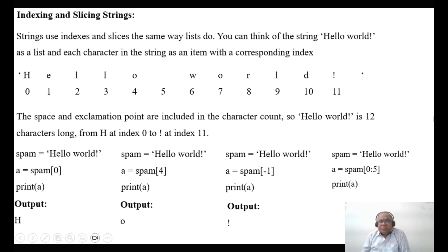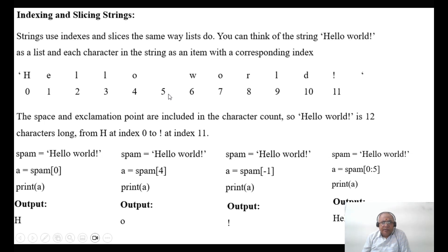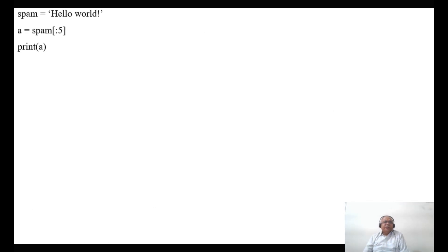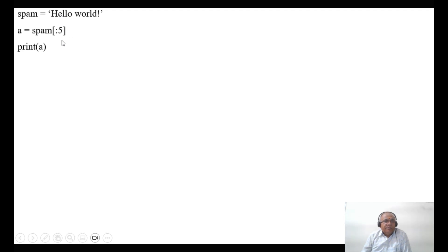Similarly, spam equals 'hello world', A equals spam[0:5]. It will start from index 0 up to index 4 — index 5 is not included. Print A gives you 'hello'. On continuation, if you say spam[:5] — when you don't give a starting number, it defaults to 0 up to 5 — print A will also be 'hello'.